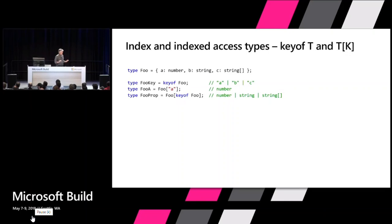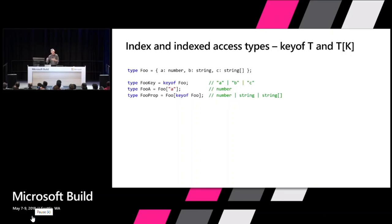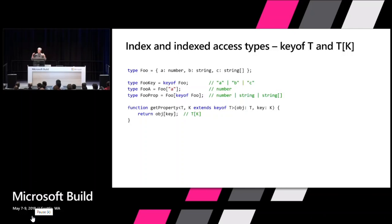This all operates on sets. If you have a Foo type and index it with keyof Foo, that means it's going to be a or b or c but we don't know which one. If you index a Foo with an a or b or c, what type would you get? You'd get a number or string or string array. This is useful because there are lots of patterns in JavaScript where you pass around objects and property names and want to retrieve properties — like a get property method, which is how getting and setting properties in React works.